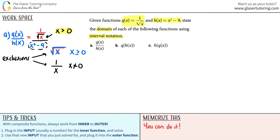Now the second part — this is in a denominator, so it cannot equal zero. Let's find the values that make it equal to zero. If x squared minus nine equals zero, then x squared equals nine. You take the square root and you get two values: x equals positive three and x equals negative three. With square roots you always have two different options. So since this equals zero, these numbers cannot be part of the domain.